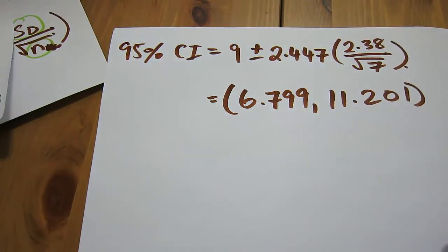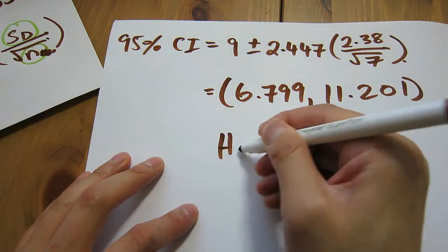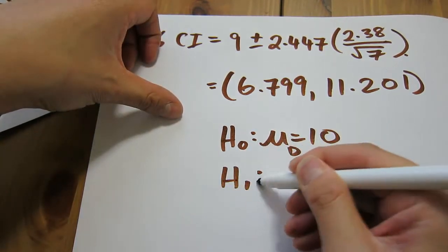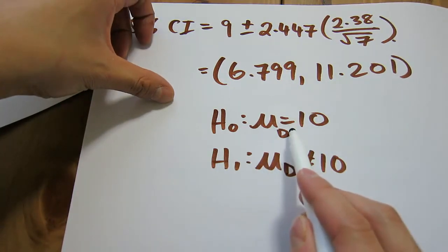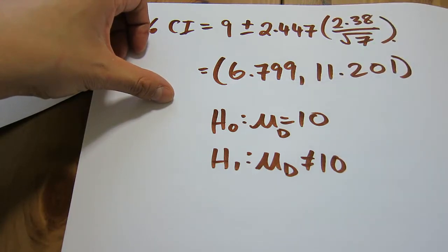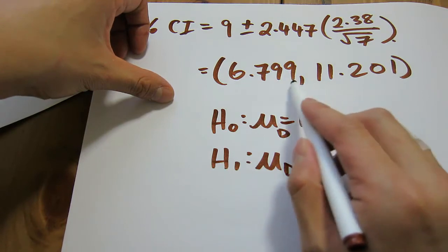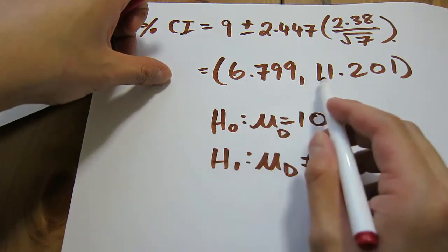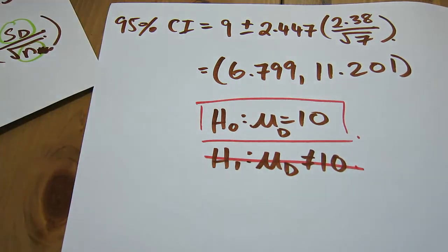There are two things to note. First, remember our null hypothesis is that mu_d equals 10. If our hypothesized population mean lies between the confidence interval, then we do not reject the null hypothesis. If it does not lie between the confidence interval, we reject the null hypothesis. In this case, 10 lies between 6.799 and 11.201, so we do not reject our null hypothesis.